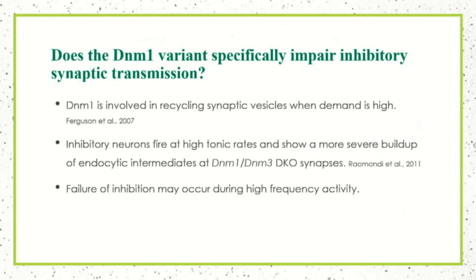This is where my lab got involved. We wanted to address the hypothesis, based on Frankel's lab's work and work in the De Camilli lab on Dynamin-1 knockouts, that inhibitory synaptic transmission is preferentially affected by Dynamin. It's expressed in all neurons, but may play a specialized role in inhibitory neurons, which often fire at higher frequencies. The hypothesis was: in the Dynamin mice, inhibitory neurons fire a lot, run out of inhibitory vesicles, stop releasing GABA, and that's when you get a seizure.